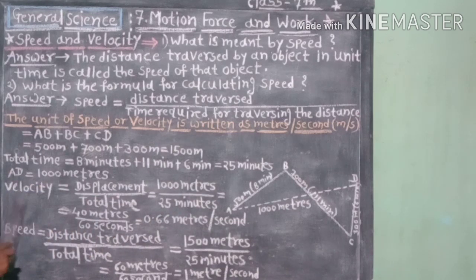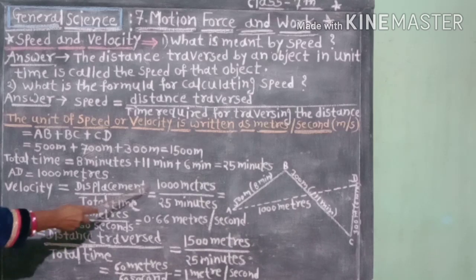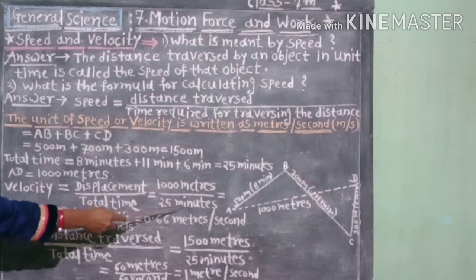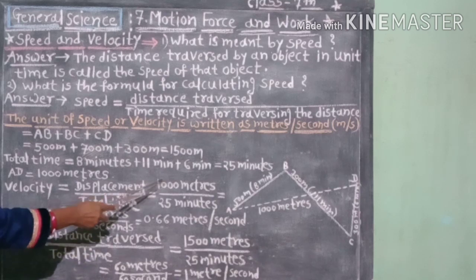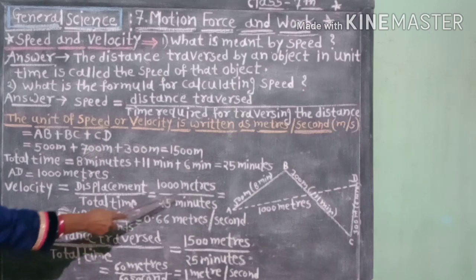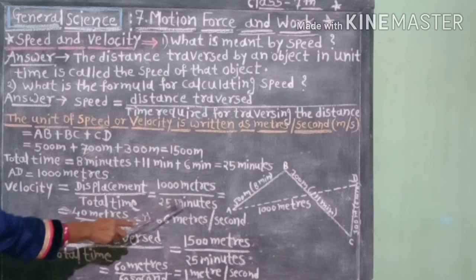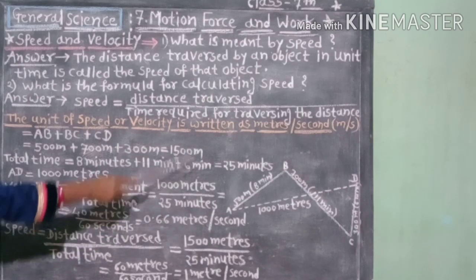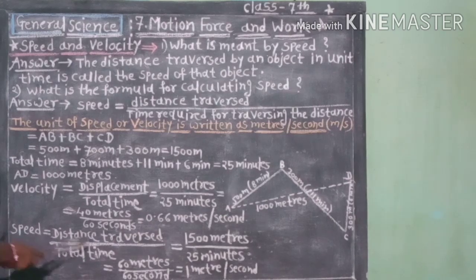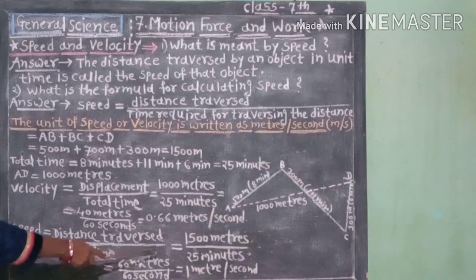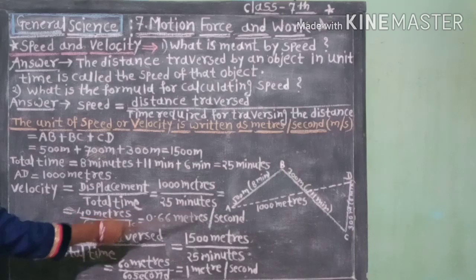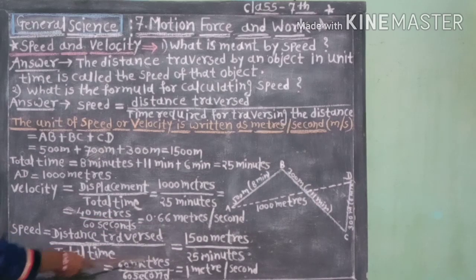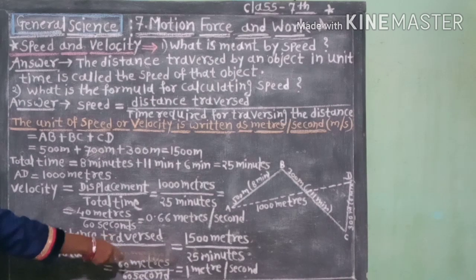याचा अर्थ: रंजितचा वेग बरोबर विस्थापन भागिला एकूण लागलेला वेळ, म्हणजे 1,000 meters भागिले 25 minutes. एक मिनिट म्हणजे 60 seconds. 40 meters upon 60 seconds is equal to 0.66 meter per second. Speed is equal to distance traversed upon total time, equal to 1,500 meters upon 25 minutes, equal to 60 meters upon 60 seconds, equal to 1 meter per second.